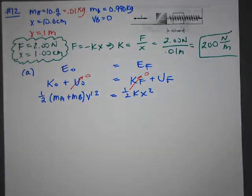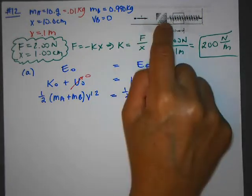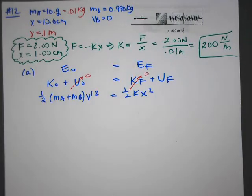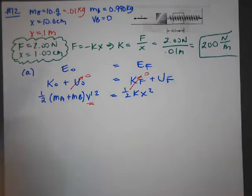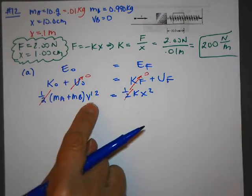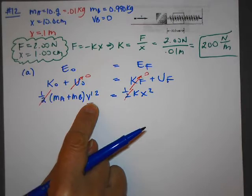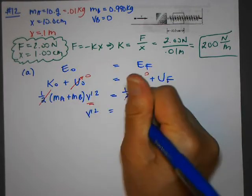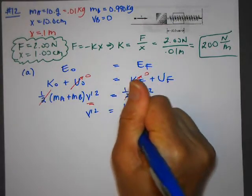All right, so if I want to solve for v prime, that's the velocity of the bullet in the block that's compressing the spring, I will just rearrange the equation to solve for the unknown in terms of the known. So my unknown is this. So what I'll do is, well, first of all, I can get rid of the 1 half. So I want to leave this on one side of the equal sign in the numerator all by itself. So I'm going to divide by this. So I'm going to have v prime squared is equal to kx squared over ma plus mb.